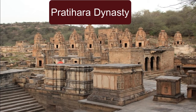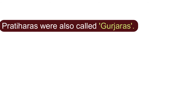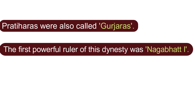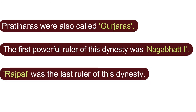Pratihara Dynasty: The Pratiharas were also called Gurjars. The first powerful ruler of this dynasty was Nagbhatta I. Rajpal was the last ruler of this dynasty.